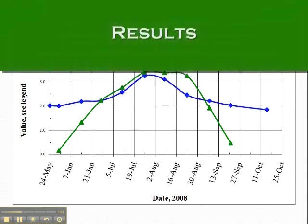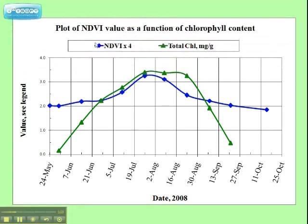Let me now discuss the results. In my earlier research on a separate field, I found a strong correlation between the NDVI and ground data, as shown in this plot. The blue line represents the NDVI index of greenness, and the green line represents chlorophyll concentration measured by a spectrophotometer, which is a ground instrument.